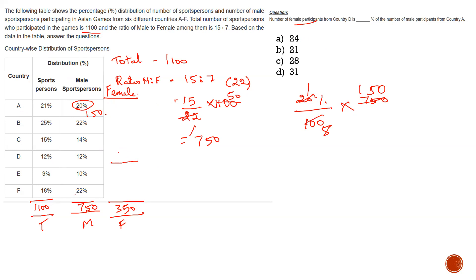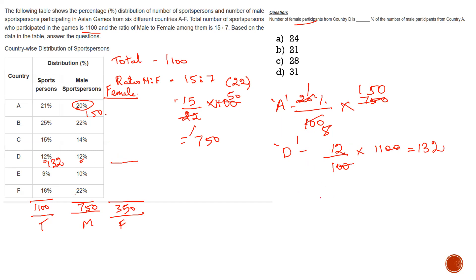For country D female participants, first I find the total number of sports persons in country D and the male sports persons in country D, then subtract. For total in country D: 12 divided by 100 into 1100 gives 132. For male in country D: 12 divided by 100 into 750. Cancelling out, I get 90.